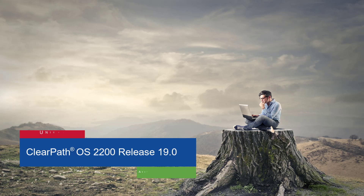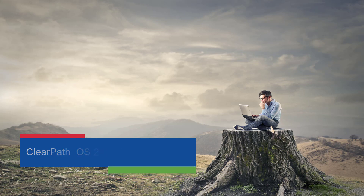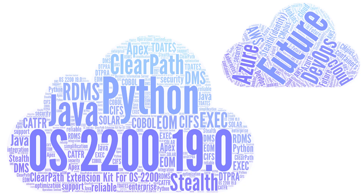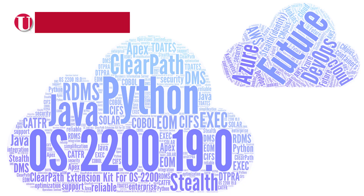Newly released for ClearPath OS 2200, Release 19.0 brings a wide array of new capabilities to the operating system. With over 50 new features in the release, we are empowering your ClearPath like never before. Let's take a quick look at five of these upcoming new features, now available in Release 19.0.